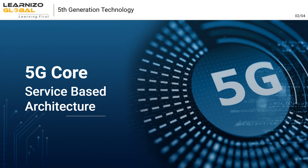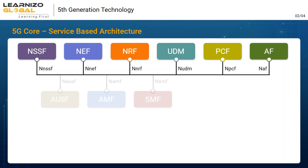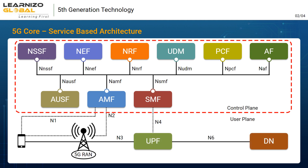The 5G core network will be based on service-based architecture. In the service-based architecture, all the network functions will be implemented as VNFs (virtualized network functions) or CNFs (cloud-native network functions), and will be a collection of multiple smaller applications called microservices. All network functions will be providing services to other network functions as service producers, and will be consuming services of other NFs as service consumers.